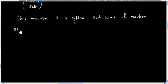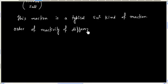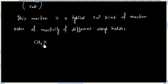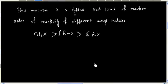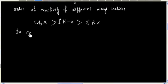The order of reactivity of different alkyl halides: Methyl alkyl halide is most reactive, then primary, then secondary alkyl halide. Now in the case of tertiary alkyl halide, mainly elimination occurs.